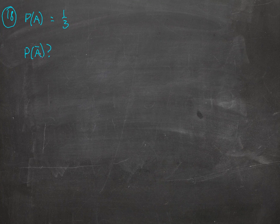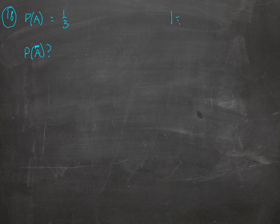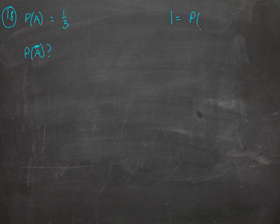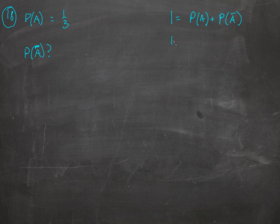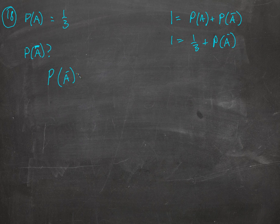This guy with a line over it — the complement of A — just means the probability that A does not happen. The total is always one — that's always the maximum probability, or 100% in percentage terms. So the probability of an event plus the probability of that event not happening equals 1. Either it happens or it doesn't. So 1 equals one-third plus the thing we're looking for — so the probability of the complement of A is two-thirds.